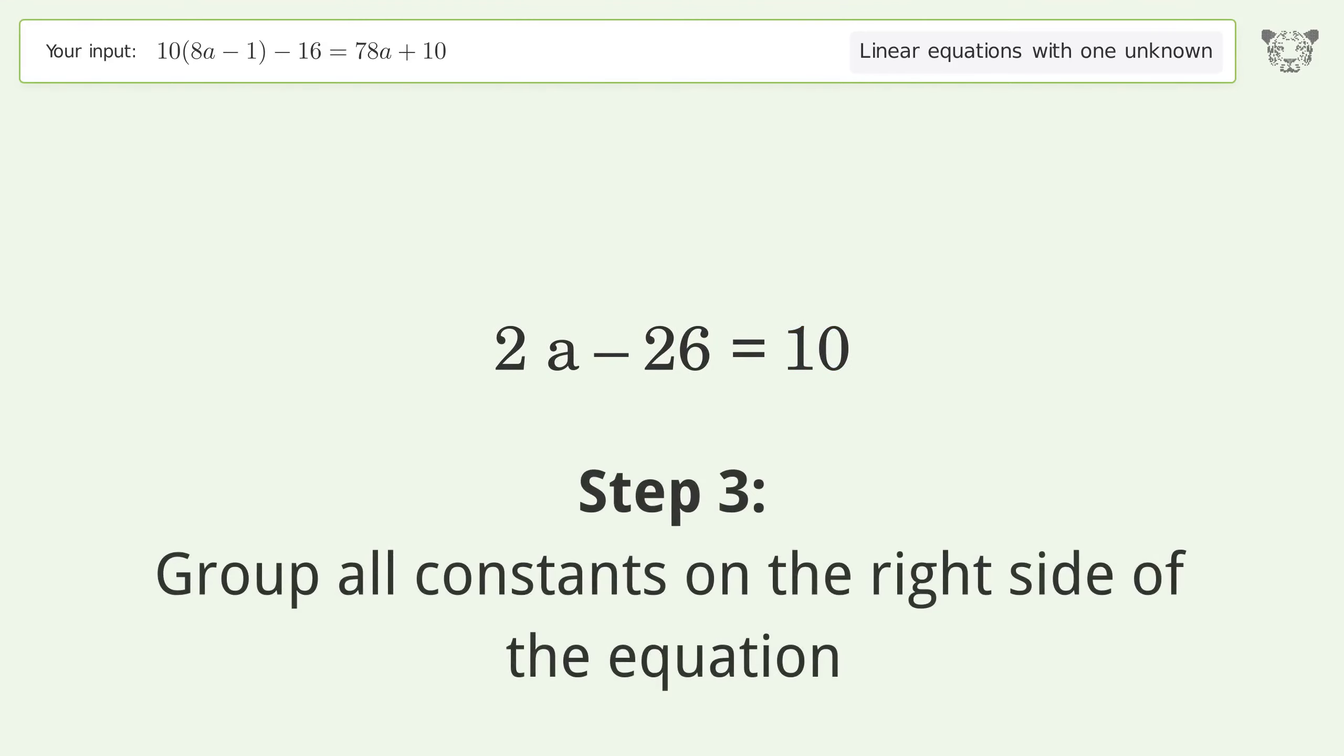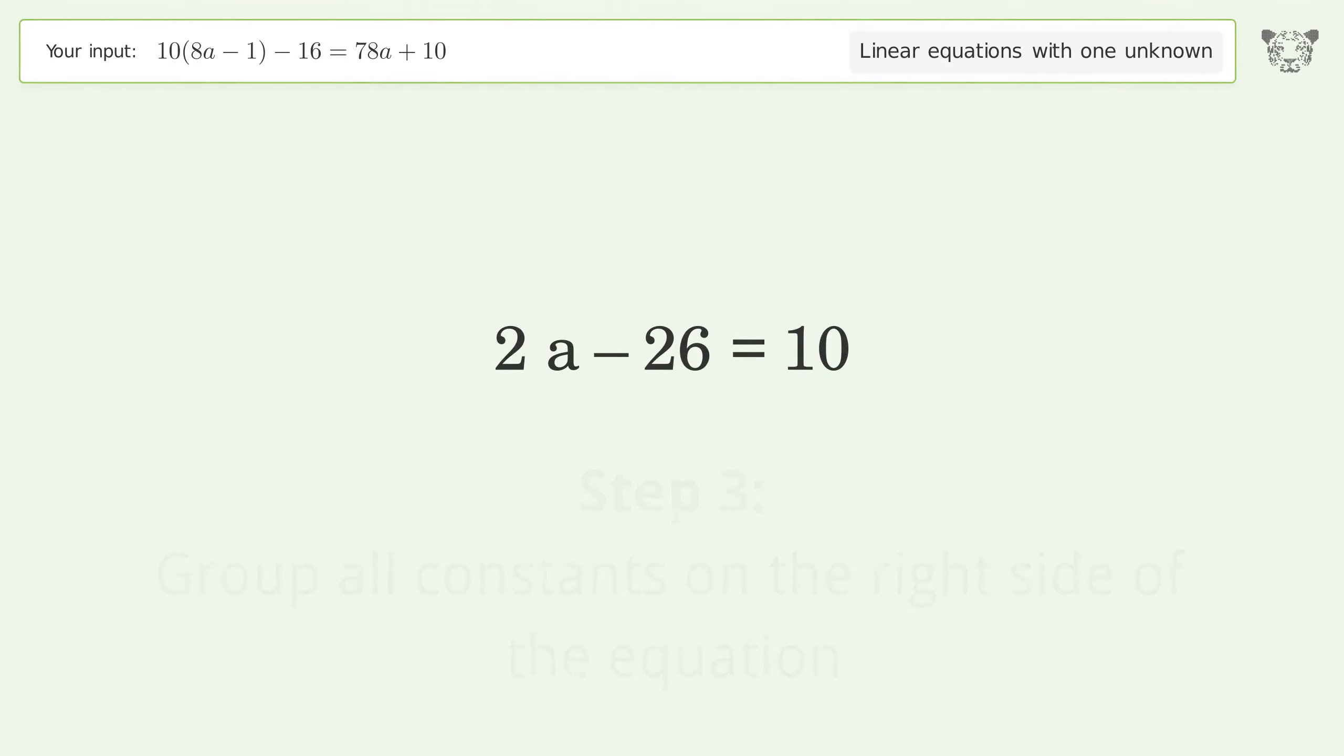Group all constants on the right side of the equation. Add 26 to both sides. Simplify the arithmetic.